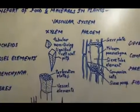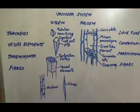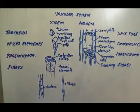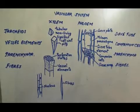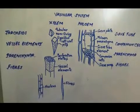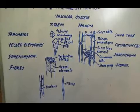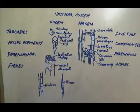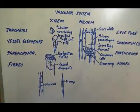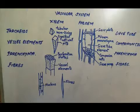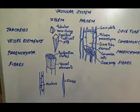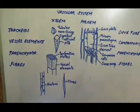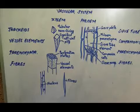It is also called the complex vascular system because these tissues, the xylem and the phloem, are not only comprising of a single tissue but of four different tissues combined together to make this complex transportation system. The xylem conducts water and dissolved minerals from the roots to the leaves of a plant.